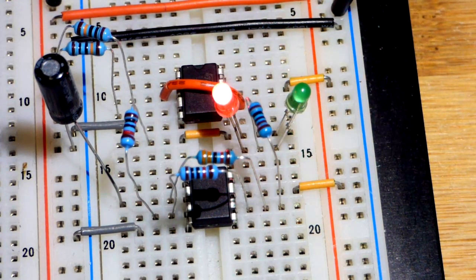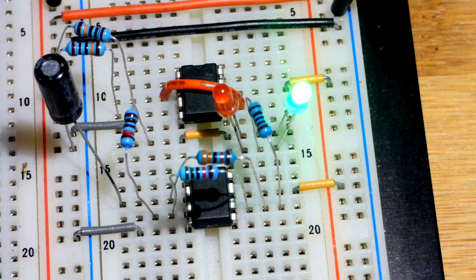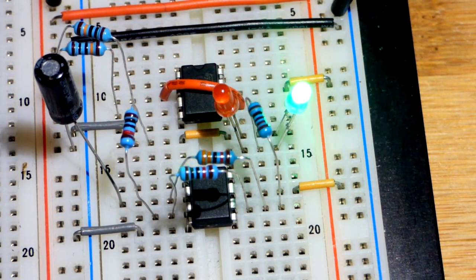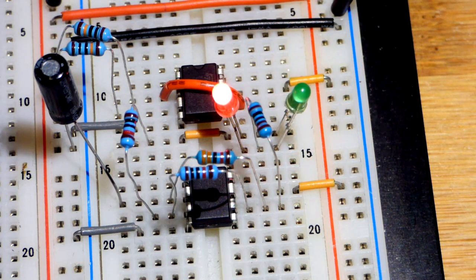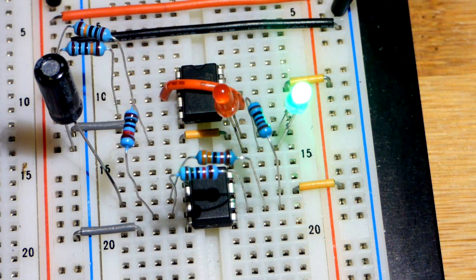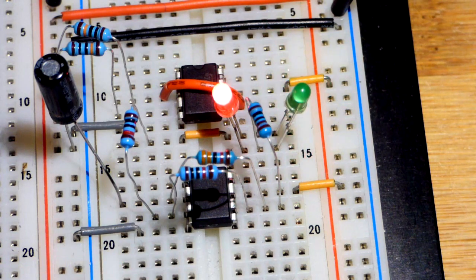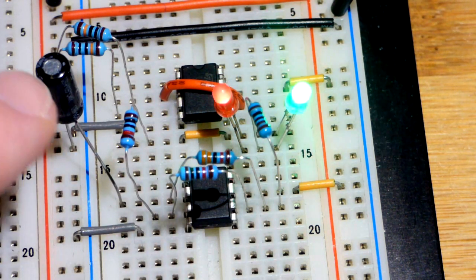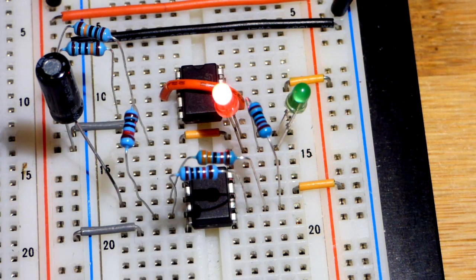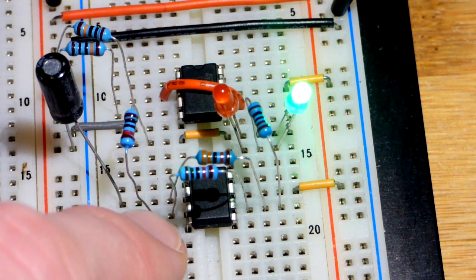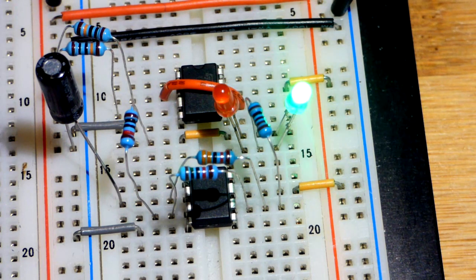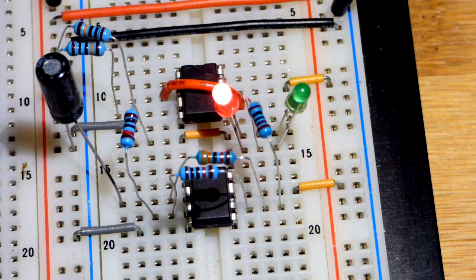It took a little bit for the capacitor to charge to what it needs to balance, but now it's just charging and discharging back and forth between two voltages. The output keeps changing, and based on what the output is doing, the capacitor is either charging or discharging.